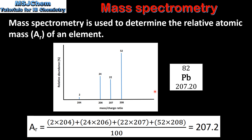This mass spectrum is for lead, which has the symbol Pb. When we calculate the relative atomic mass, we get 207.2, which is the same as the value on the periodic table.